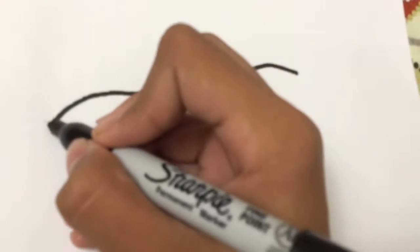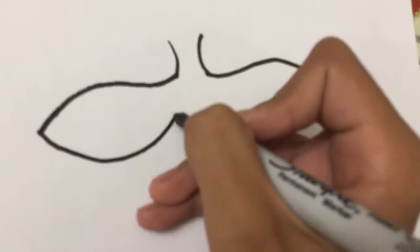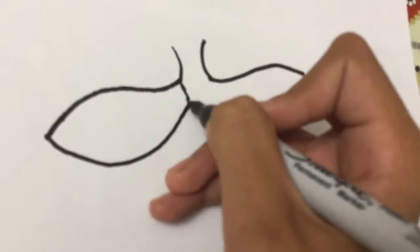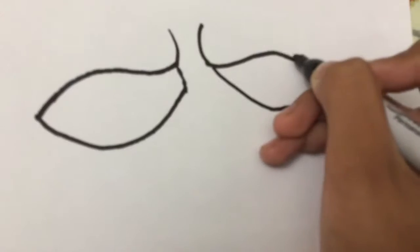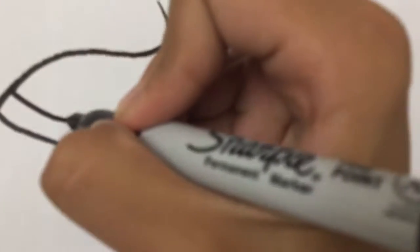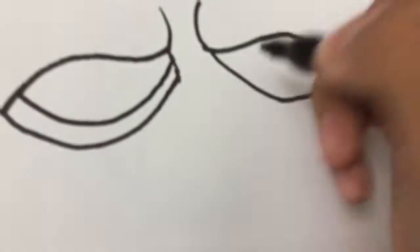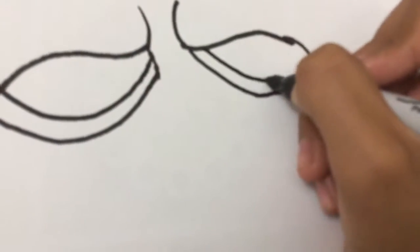And then you just curve back in again and do the same on the other side. Let's make this a little bigger there. Okay, next we're gonna color the inside part of this eye like this.